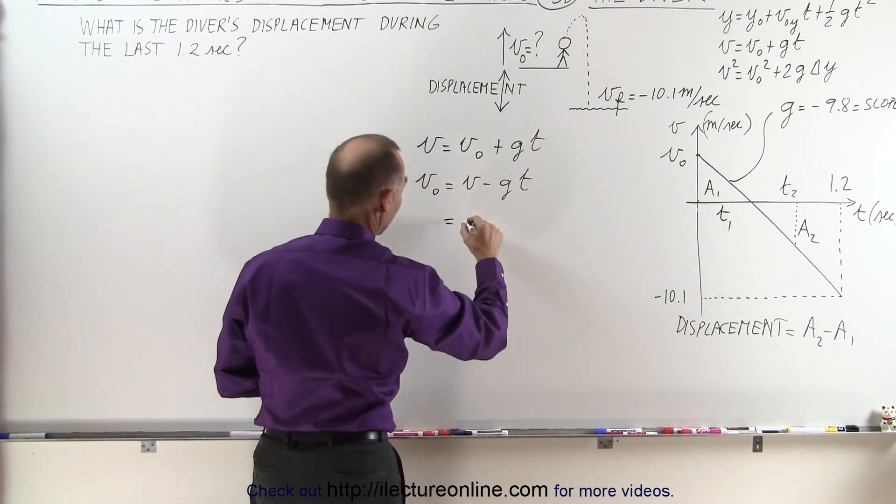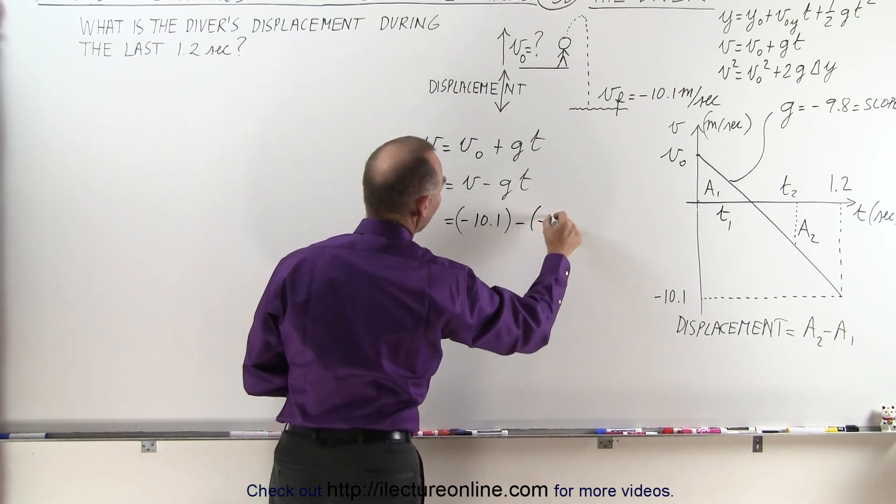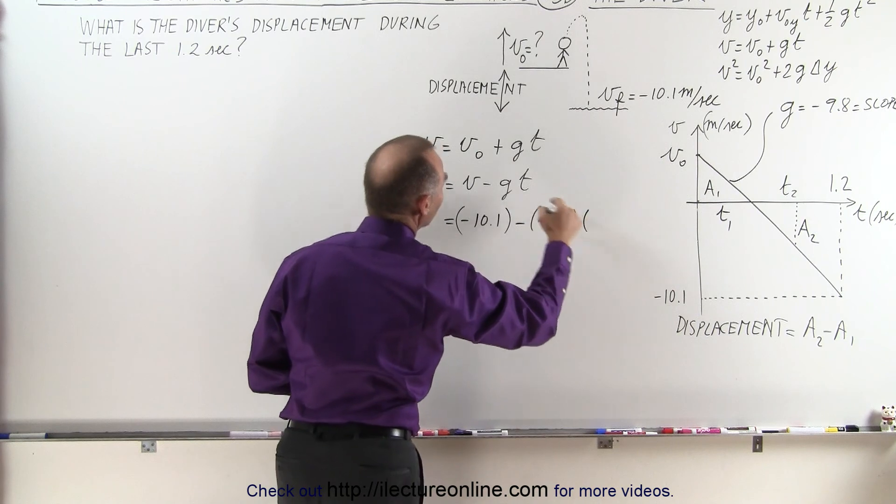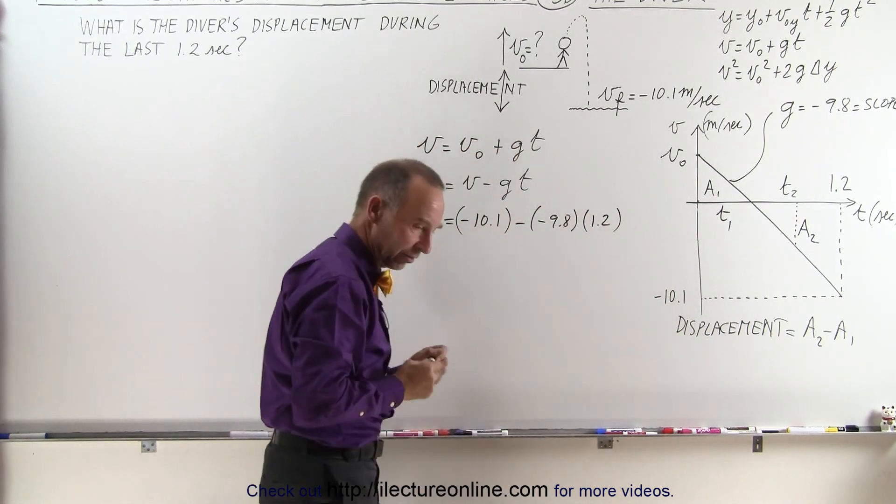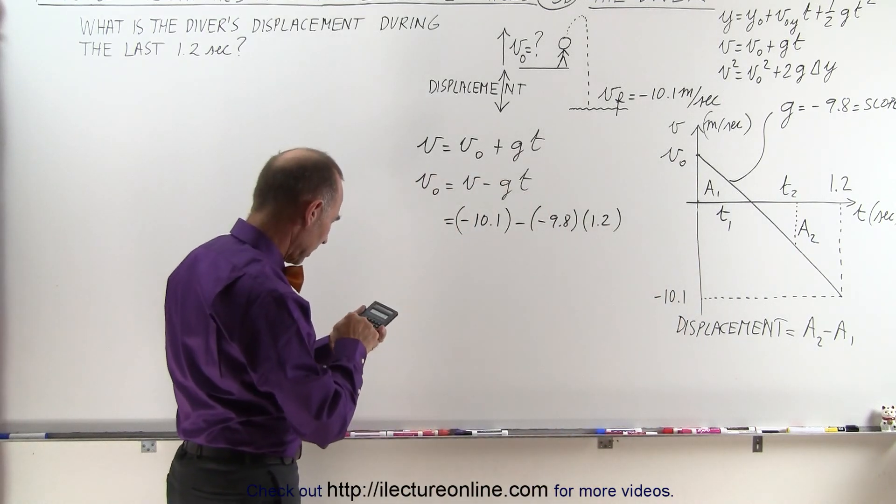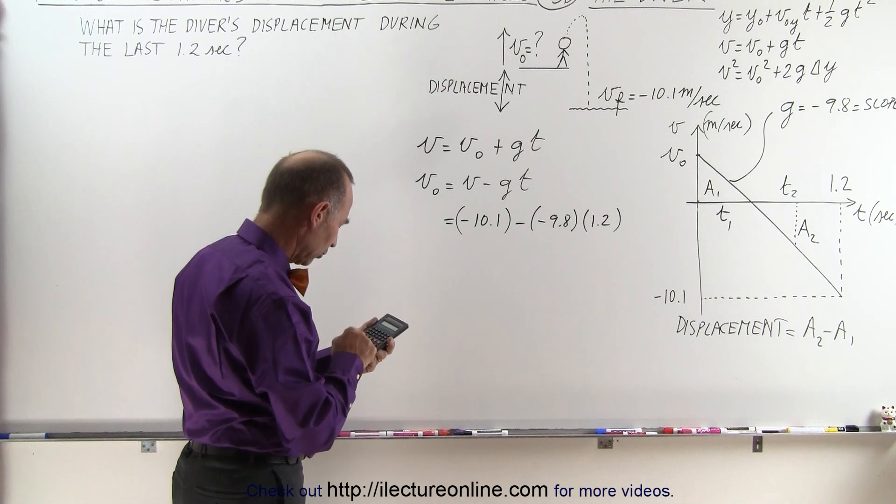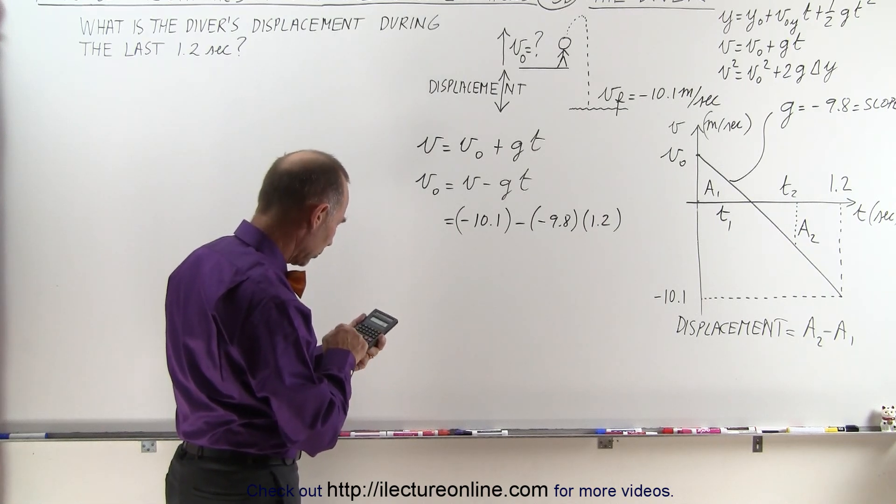And when we plug in the proper values, the final velocity is minus 10.1 minus a minus 9.8 times the time for the total trip, which is 1.2 seconds. So let's see what our initial velocity is. 9.8 times 1.2, and then we subtract from that 10.1.